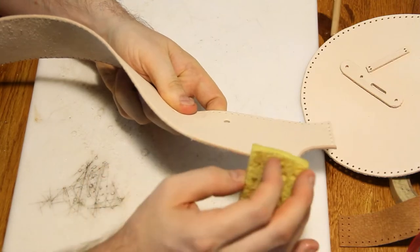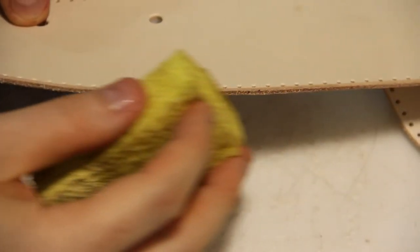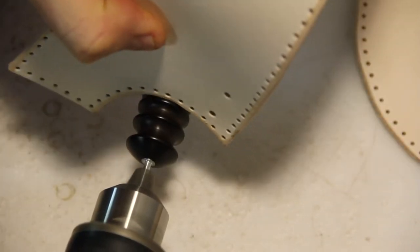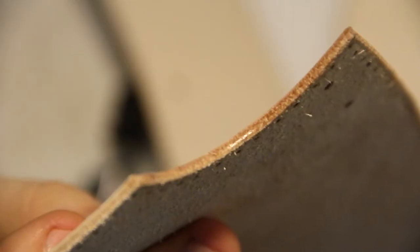After all your edging is done, take a wet sponge and start dampening all your edges. Now take out whatever you're going to use for your burnishing wheel and burnish those edges.